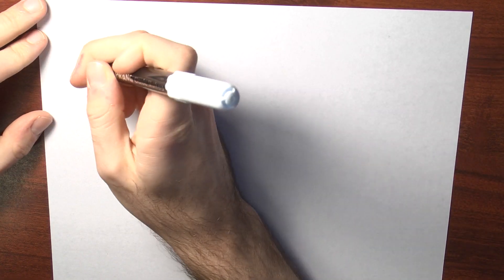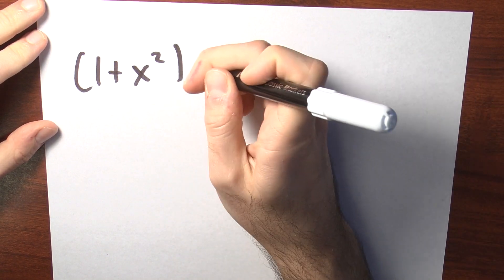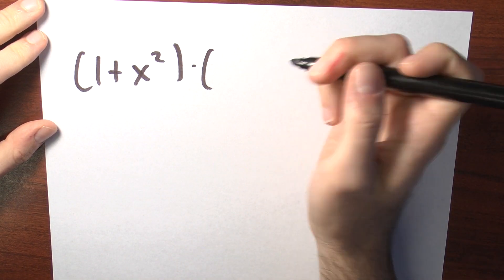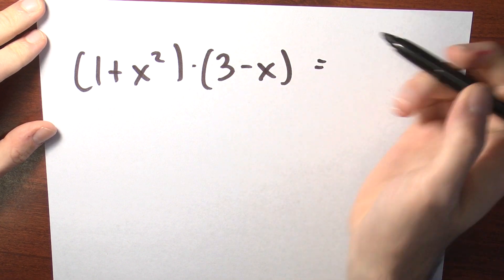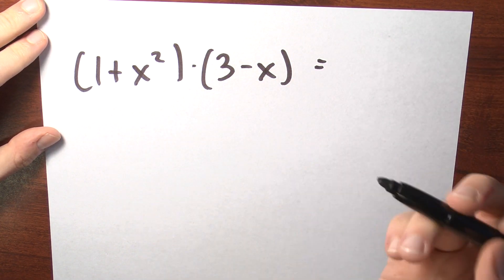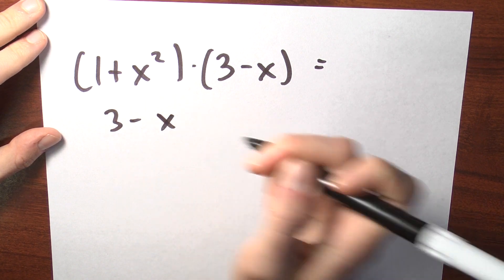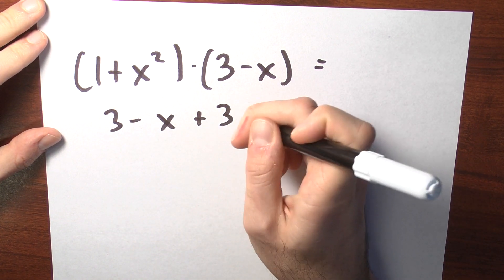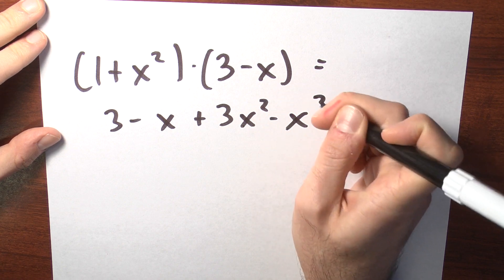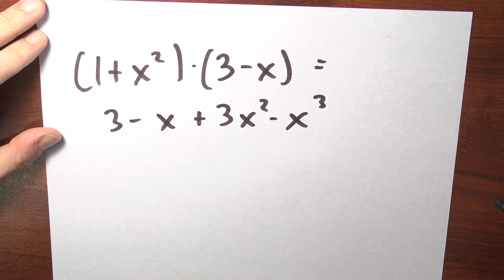We can multiply polynomials. If I have a couple polynomials, like 1 plus x squared, maybe multiply that times 3 minus x. Well, I can multiply polynomials and get a new polynomial — 1 times 3 minus x plus 3x squared minus x cubed is what I get when I multiply these two polynomials.